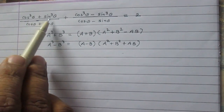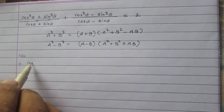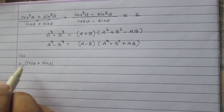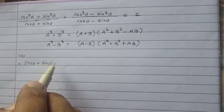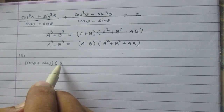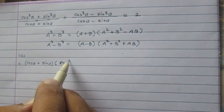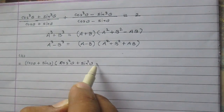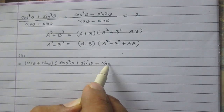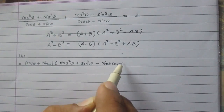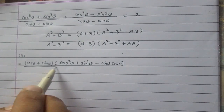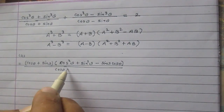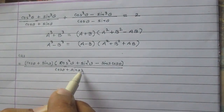Cos cubed theta plus sine cubed theta becomes cos theta plus sine theta — that is like a plus b — then multiplied by a squared plus b squared minus ab, whole divided by cos theta plus sine theta.